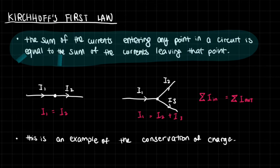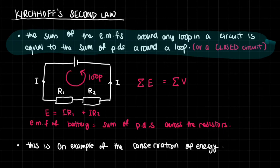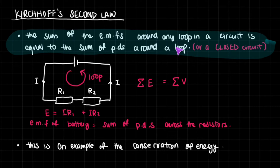Kirchhoff's first law is actually very logical and easy. Thankfully, the same can be said for Kirchhoff's second law. Kirchhoff's second law tells us that the sum of the electromotive forces, the EMF, around any loop in a circuit is equal to the sum of the potential differences around that same loop. Instead of using the word 'loop,' you could also say 'closed circuit.'